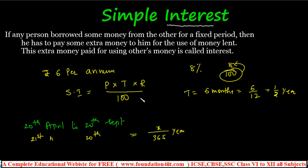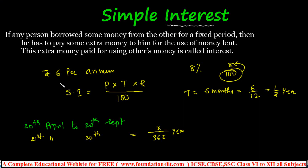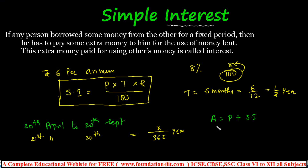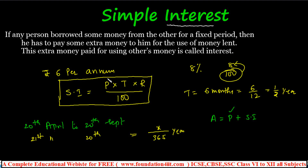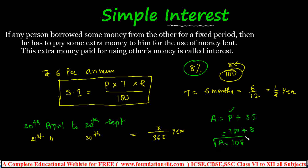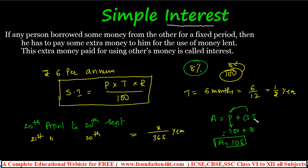These are the basic things. All problems in simple interest use the formula SI = PTR/100. Similarly, Amount = P + Interest, i.e., A = P + PTR/100. Amount is the total you receive — the principal plus interest. For example, 100 rupees at 8% for one year gives 8 rupees interest, so amount is 108. You deposited 100 but after one year you get 108, so principal plus simple interest equals amount.